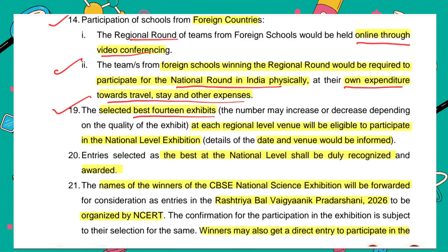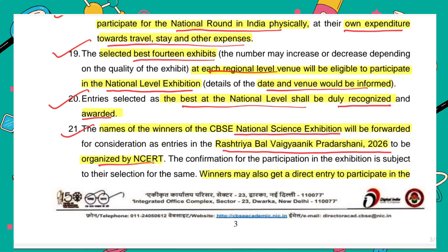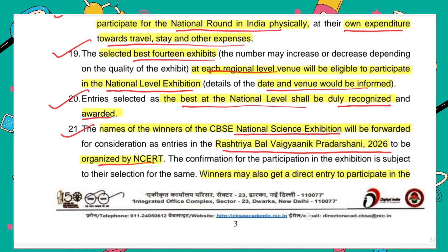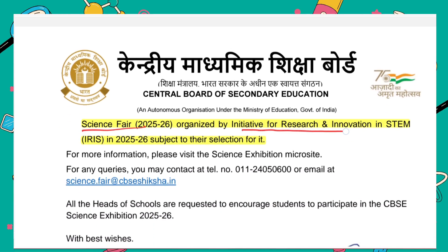The best 14 exhibits at each regional level will be selected for the national level. For example, if there are 10 regional levels, then 10 × 14 = 140 models will be selected and go to the national level. The date and venue will be informed later. Entries selected as best at the national level will be duly recognized and awarded. The names of winners of the CBSE National Science Exhibition will be forwarded to the Rashtriya Bal Vaigyanik Pradarshani 2026 organized by NCERT. Additionally, winners will also get direct entry to participate in the Science Fair organized by Initiative for Research and Innovation in STEM (IRIS) 2025-26.